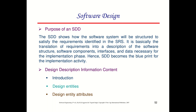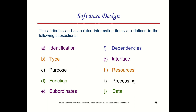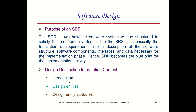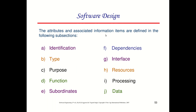The design description information content includes: the introduction, the design entities and design entity attributes. The attributes and associated information items defined in the following subsections are: identification, type, purpose, function, subordinates, dependencies, interfaces, resources, processing, and data.